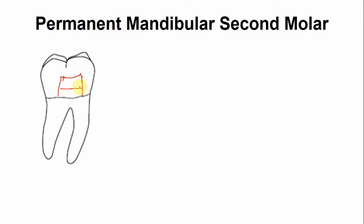This is the mesial root. In the mesial root there are two canals, which we will discuss when we look at the proximal aspect. In the mesial root, the canal has a slight curvature in the apical one third.